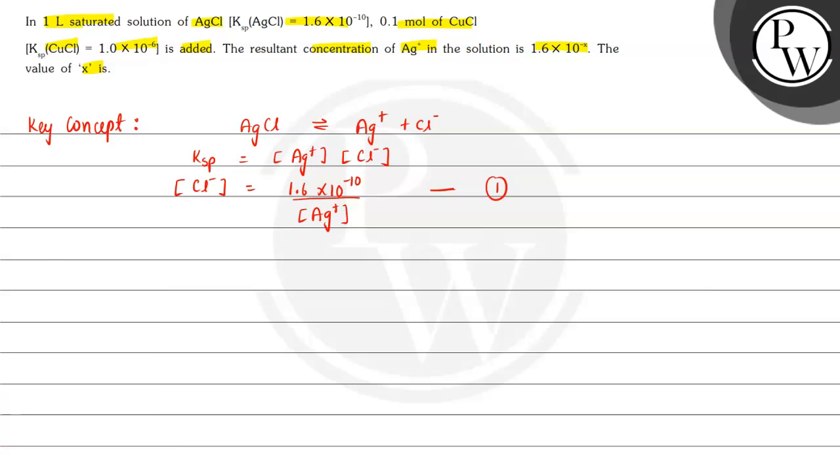Next, for the second part we have CuCl. This will be in equilibrium with Cu+ and Cl-. So in this case, it is given that CuCl we have 0.1 mole initial concentration. Finally, let x moles are formed for Cu+ and Cl- each. So CuCl will be 0.1 - x.